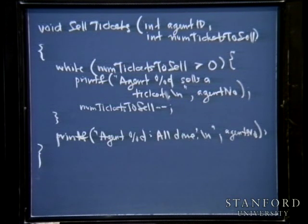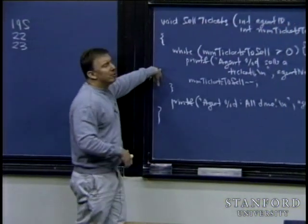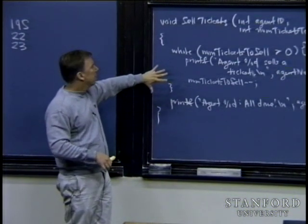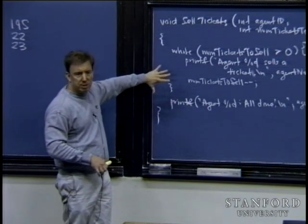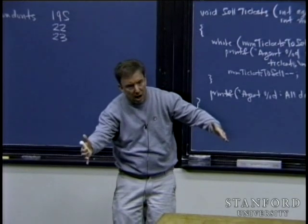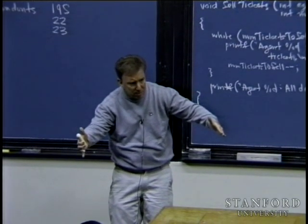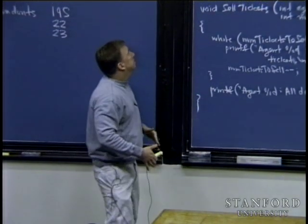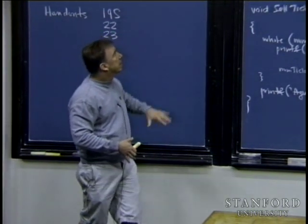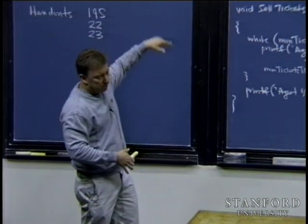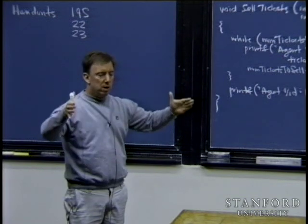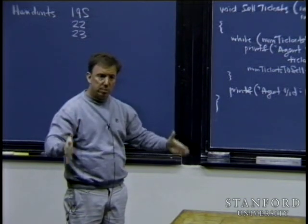So the printout of this would have 160 lines — 16 lines per ticket agent. They would be sorted: all ticket agent number one, followed by an 'all done' comment as the 16th line, then all of agent two, then agent three, etc. There are 10 agents, so 160 lines total.